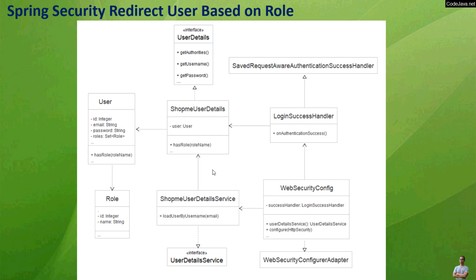In order to implement the code for redirecting users based on their roles, we need to update the User entity class to implement a hasRole method that will return true if the user has a given role name. We also need to update the custom UserDetails class that wraps an instance of the User class — its hasRole method similarly delegates to the hasRole method in the User entity class.